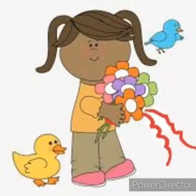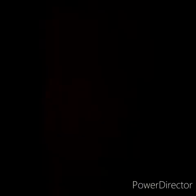So children, now I will show you some pictures which will help you all to understand this concept of up and down more clearly. Let us look at the pictures. See children, in this picture the blue bird is up and the duck is down. Blue bird is up and duck is down. Up. Down.